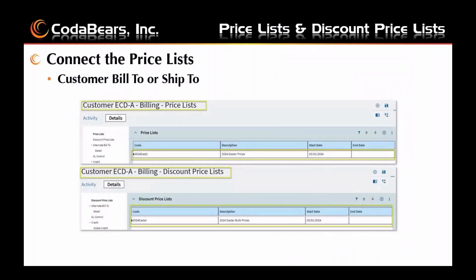Connecting the price list: to apply a price list to the customer bill to or ship to, you need to add the price list to the price list card or discount price list card in customer maintenance. The customer ship to follows a similar process. For customer ECDA, you can add a price list by clicking the plus button in Kinetic. You do have to know the code for your price list. You can have multiple price lists or multiple discount price lists, and they go in the order listed — you can move them up and down using the arrows.